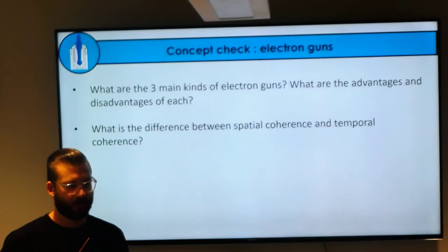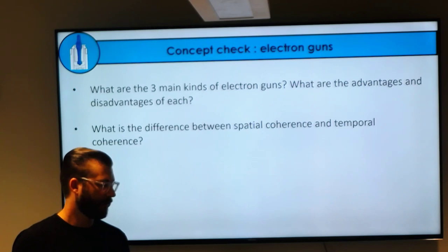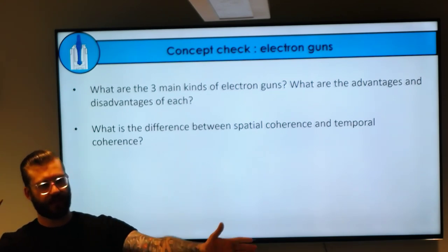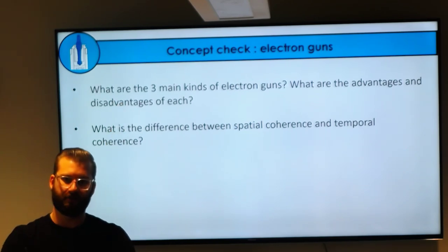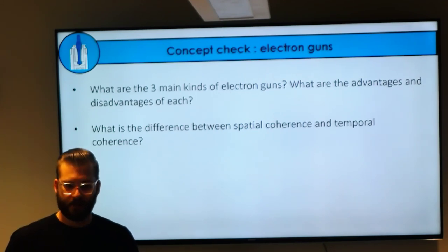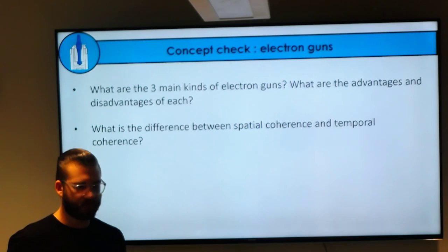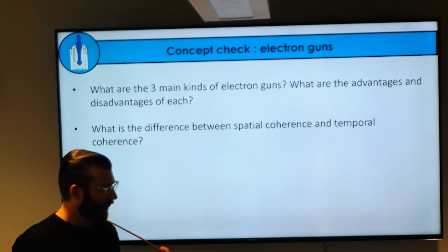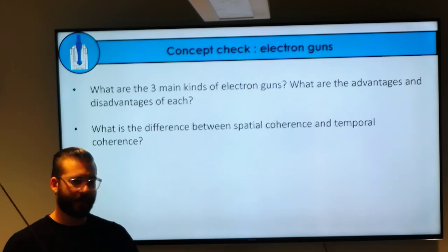What's the difference between spatial coherence and temporal coherence? Spatial coherence is the spread of the electrons—filaments give a rough spray, whereas field emission guns give a really nice parallel beam. Temporal coherence is how fast they're moving. We measure them in electron volts or kiloelectron volts: 120 keV or 300 keV microscopes. A field emission gun has an energy spread of about one to two electron volts, whereas a tungsten filament has a much wider range.